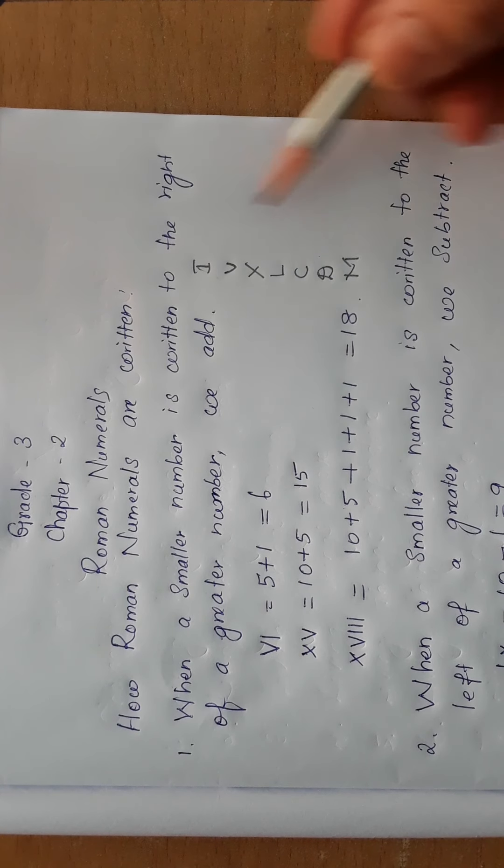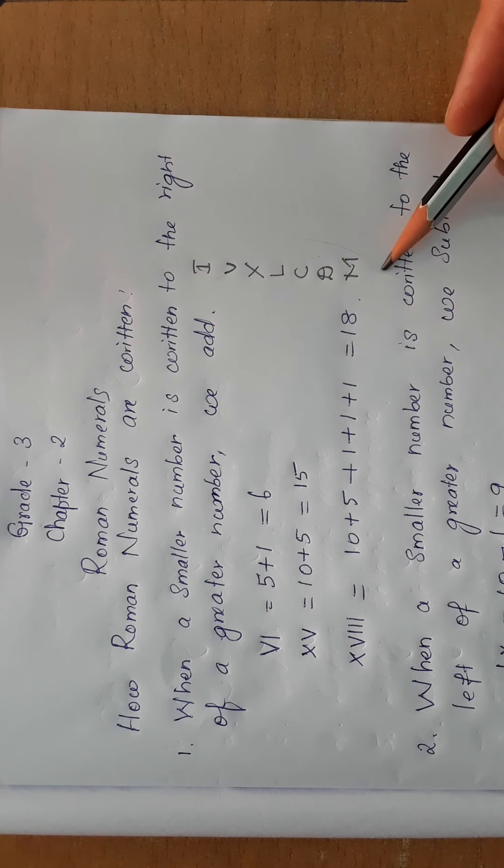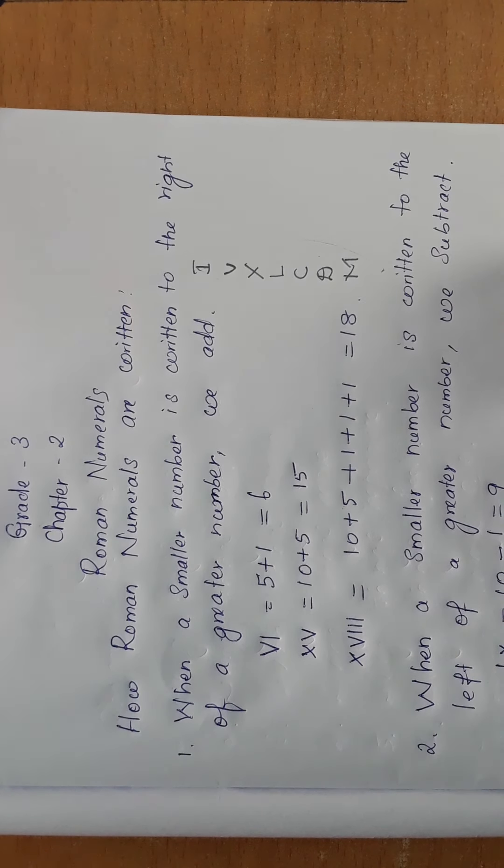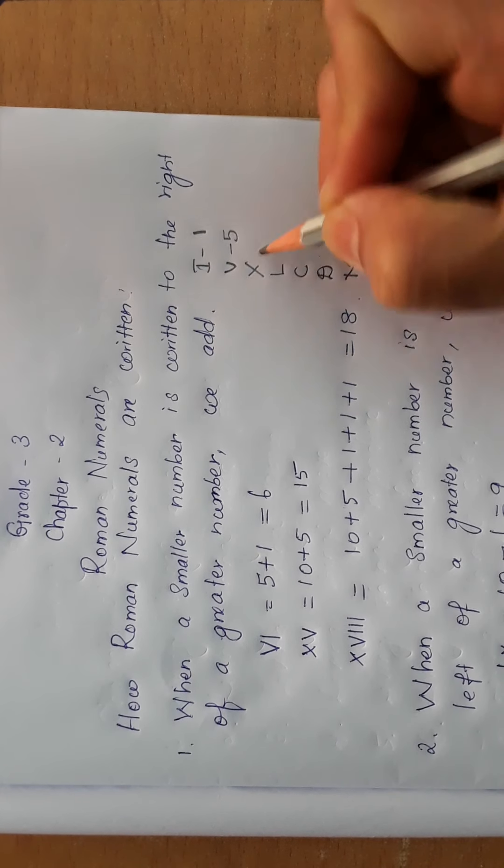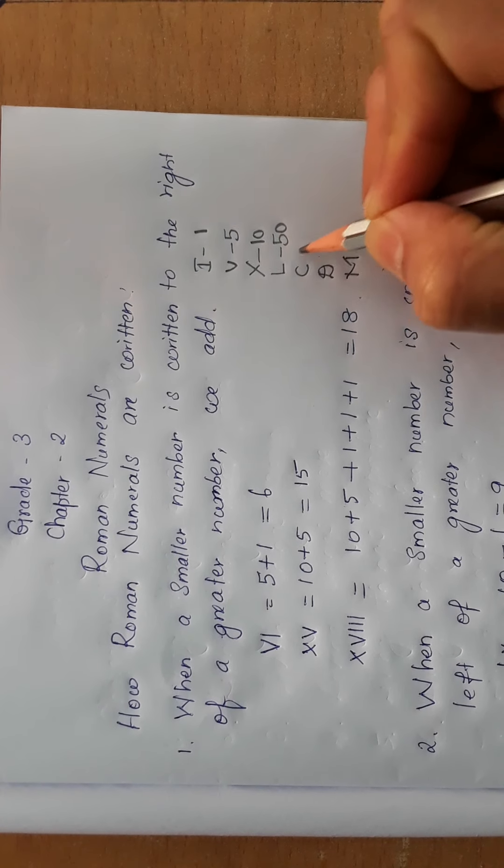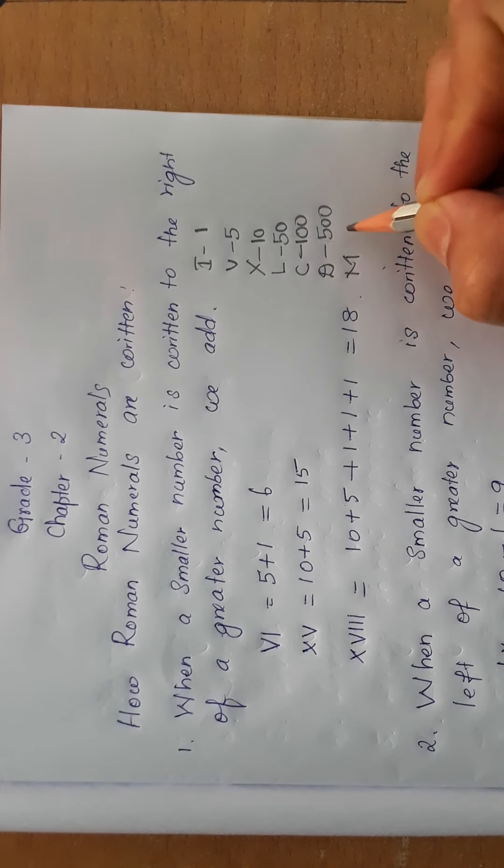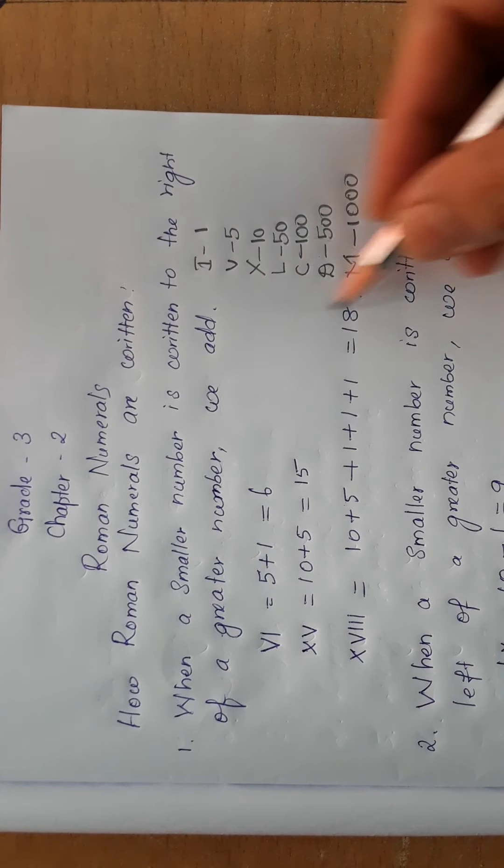Roman numerals will consist of only these letters. Using these letters we will make Roman numerals from 1 to 50 in your class. We know I means 1, V means 5, X means 10, L means 50, C means 100, D means 500, M means 1000. These are all the letters in Roman numerals.